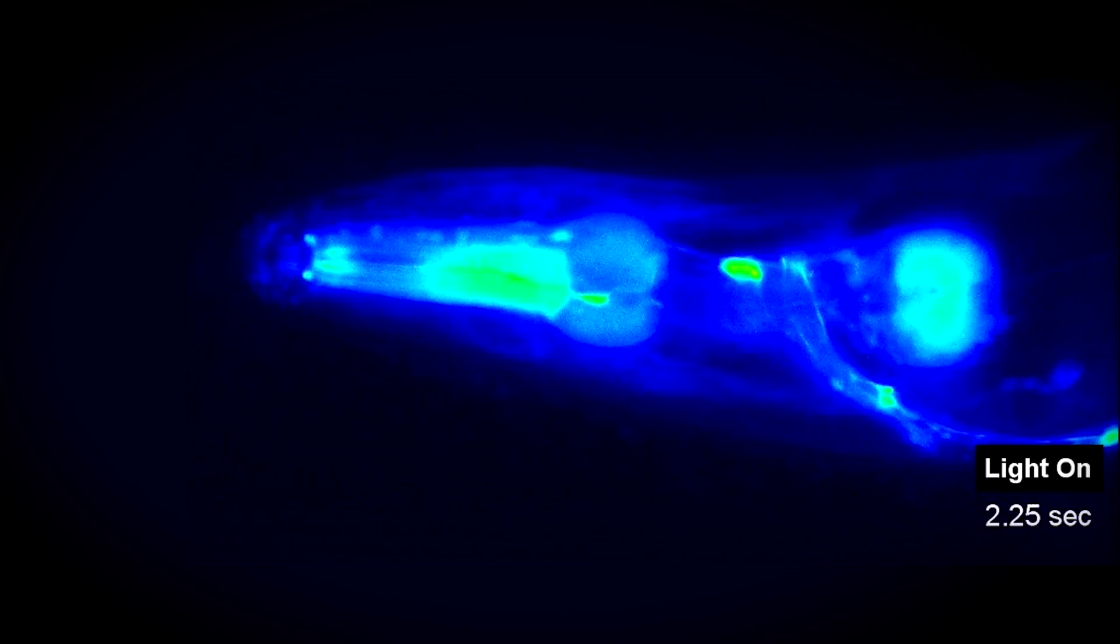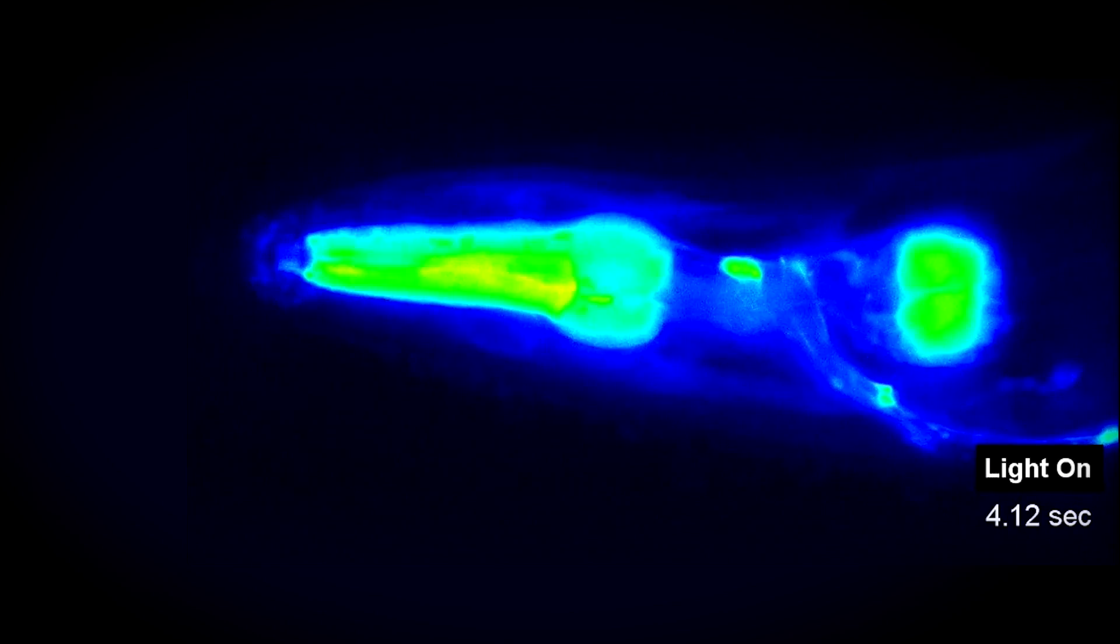We found a neuron that directly controls the muscles that produce the spitting. I found three neurons which are able to function upstream of this neuron to make the worm spit.